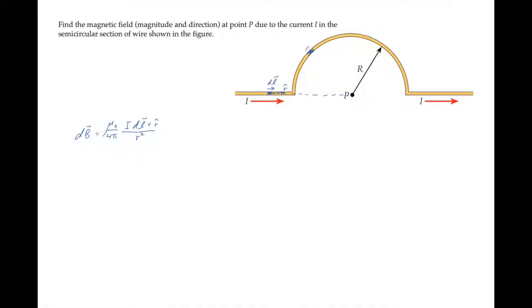When we come up here, we see that dl is in this direction with the current, r-hat is toward the point P, those are perpendicular. So the magnitude of the magnetic field simplifies to this expression I'll write here.